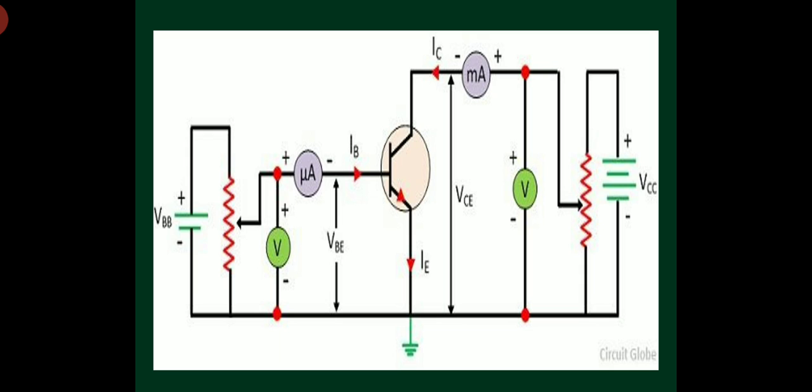IB is very, very less when compared to IC and IE. IC and IE are in the range of milliamps, while IB is in the range of microamps only. On the output side, the output terminal must be reverse biased.